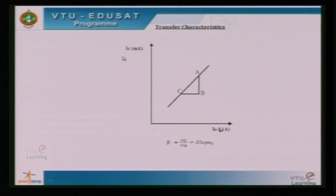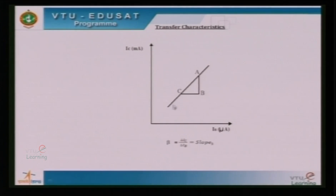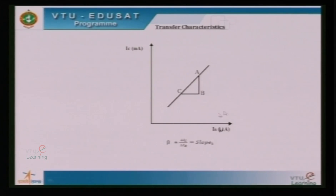From the results it is clear that input resistance is of the order of 500 ohms whereas the output resistance is in the range of 2 kilohms, ensuring amplification. The current amplification factor is determined by plotting transfer characteristics — IC versus IB. IB is measured in microamps and IC in milliamps, showing a linear increase. IB is varied in steps of microamps while IC is obtained in steps of milliamps, ensuring amplification of the order of 10³.